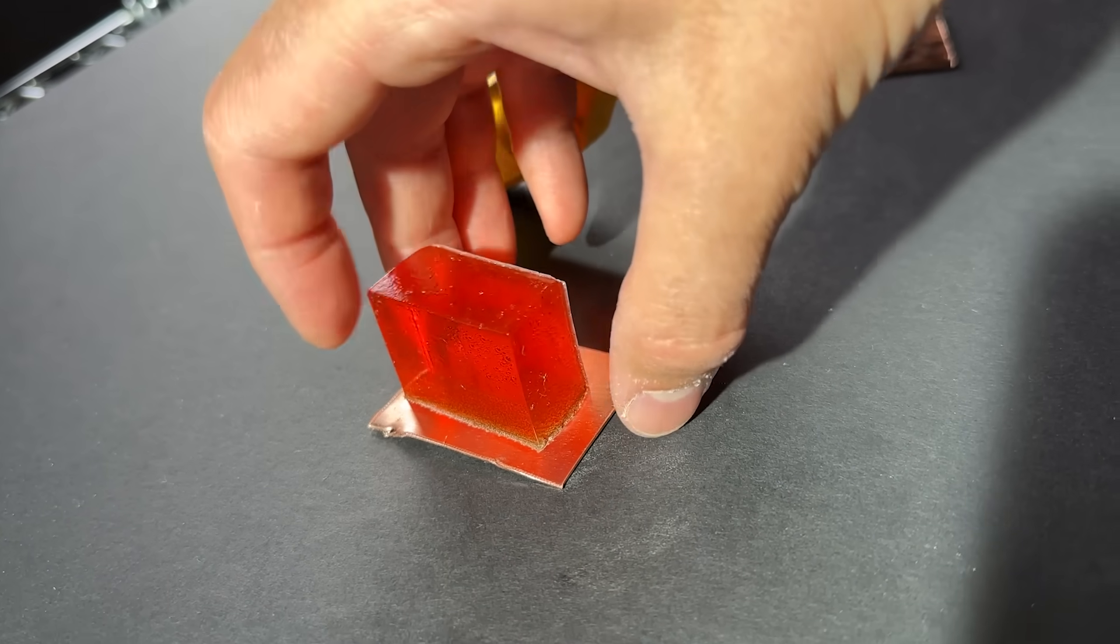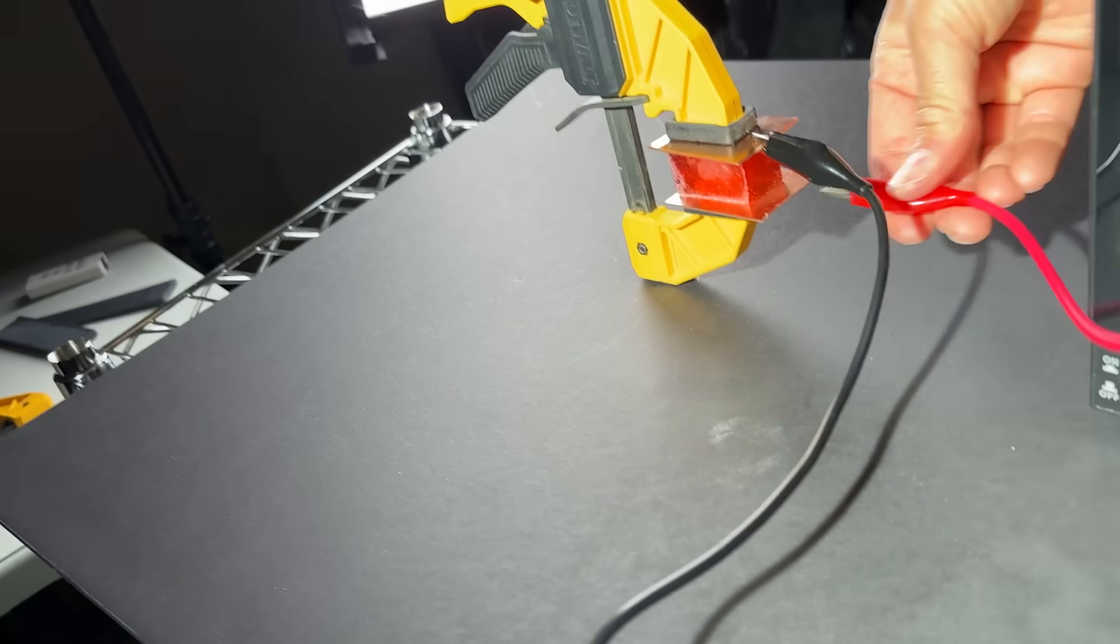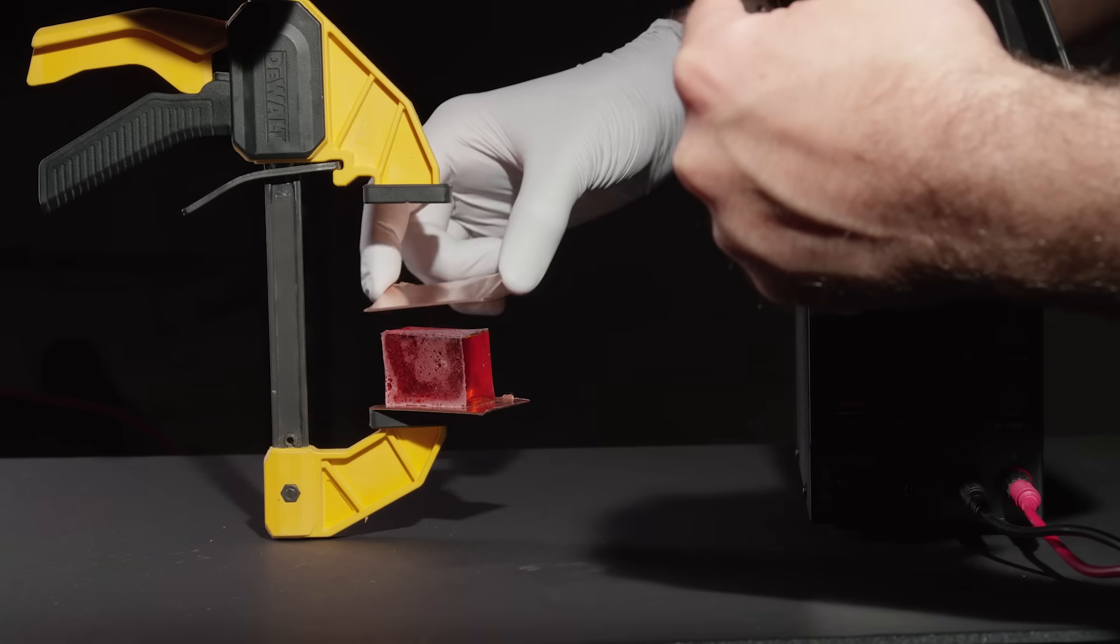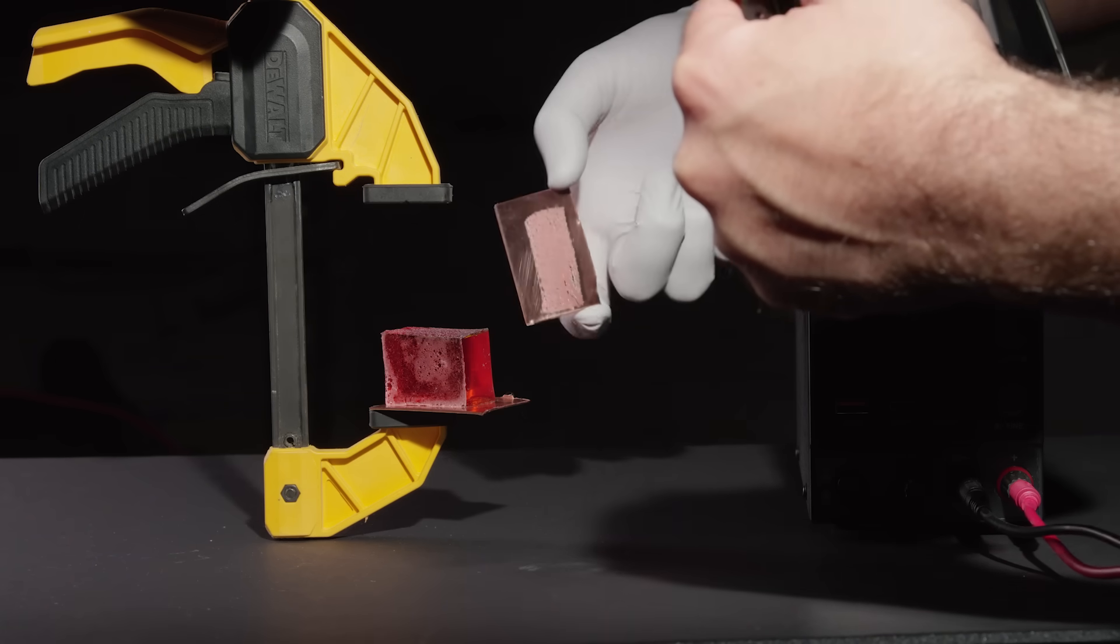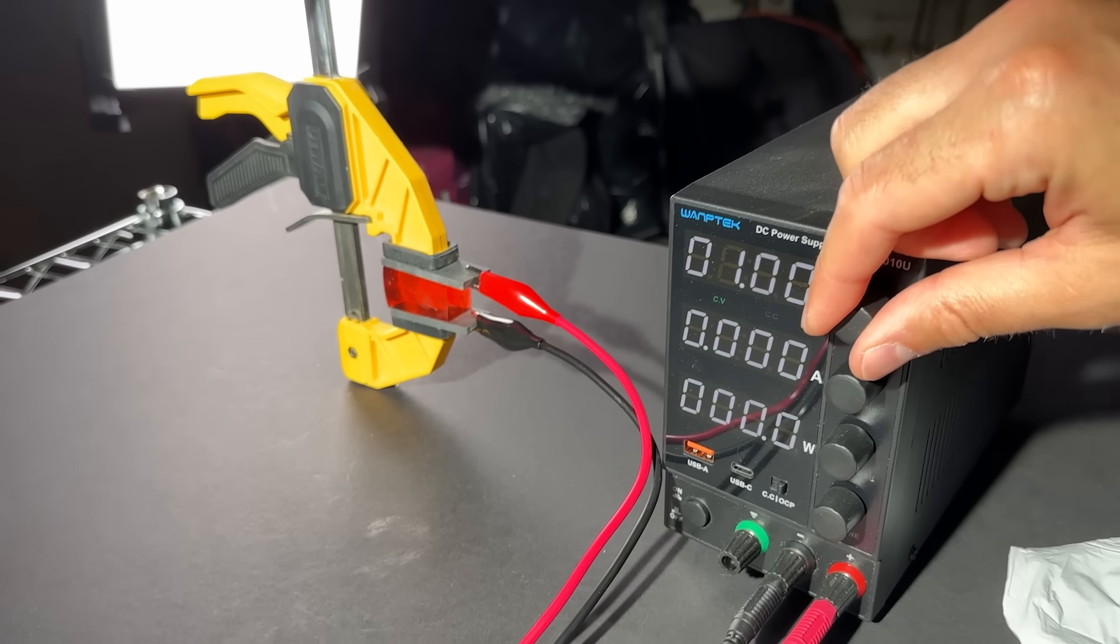That is stuck. The magic part comes when I reverse the polarity. Red's going on the bottom. So now the current is flowing the opposite direction, and the adhesion is undone. That came right off. That was the part that was stuck before. Reversible electroadhesion. Magic.